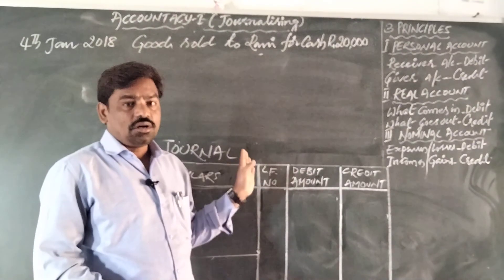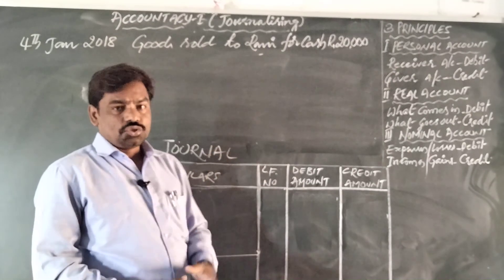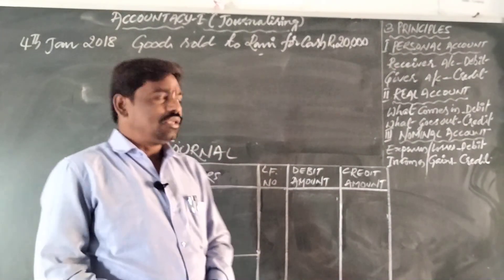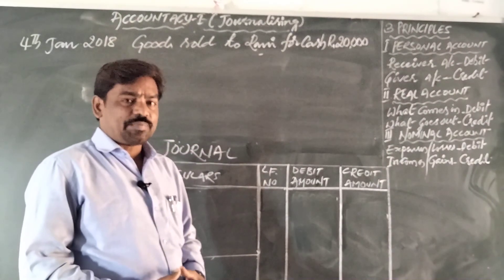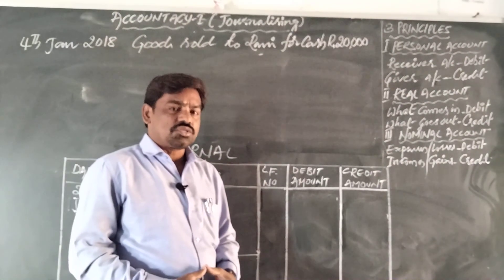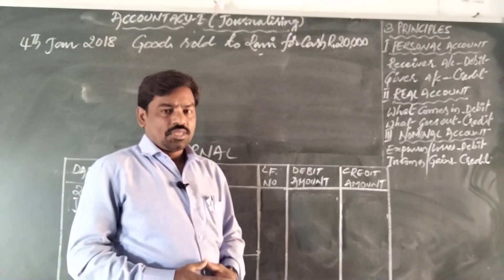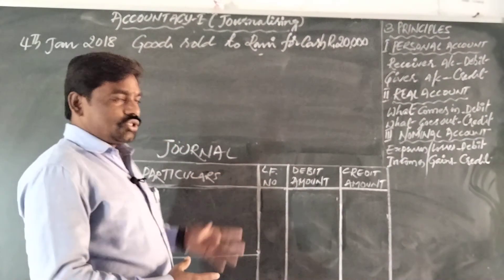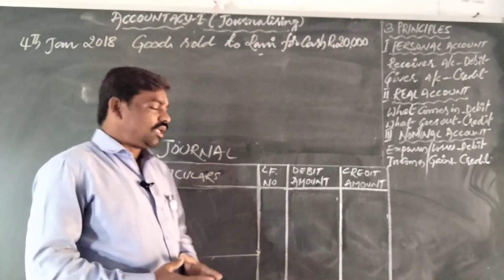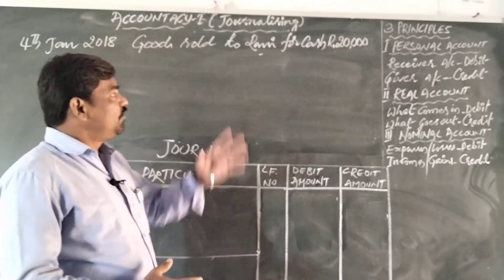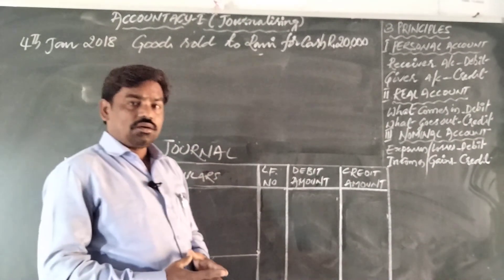As per the dual aspect concept, every business transaction will have two aspects. In order to write the journal entry in the book of journal, we need to find those two aspects in the given accounting transaction.